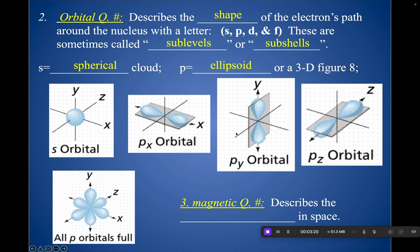You should know that S has one, P has three, and that S is spherical, and P is this, some people call it a dumbbell shape, ellipsoid pattern, however you want to call that.